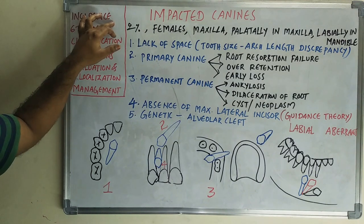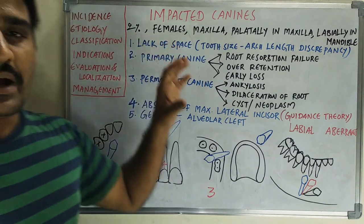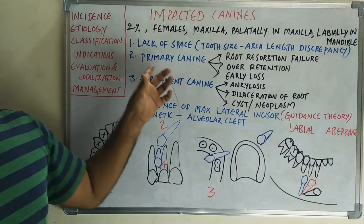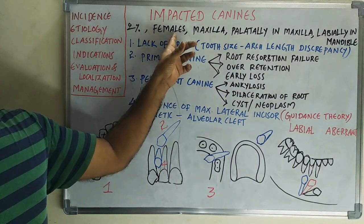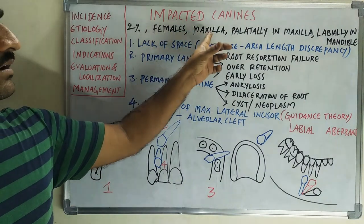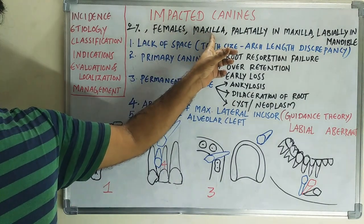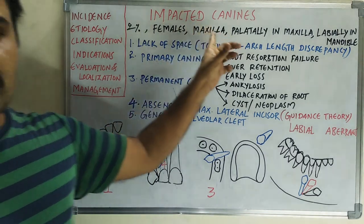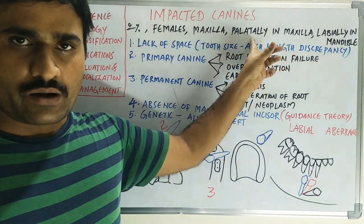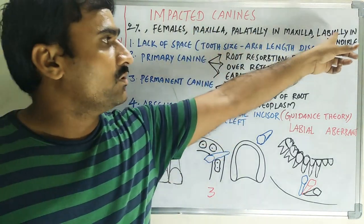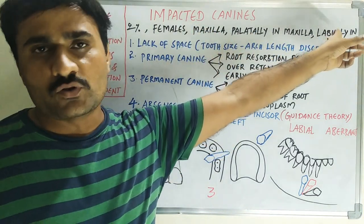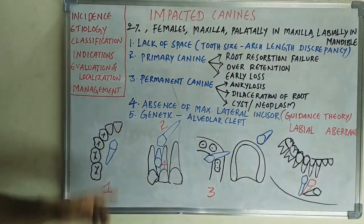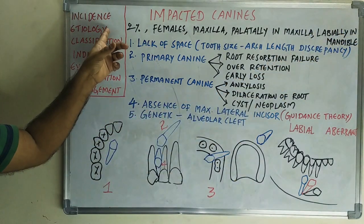Regarding incidence, impacted canines are seen in 2% of the population. They are more common in females and more common in the maxilla compared to the mandible. In the maxilla, palatally placed canines are more common. In the mandible, labially placed canines are more common.